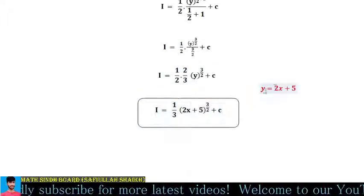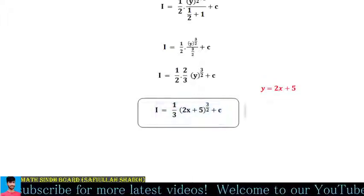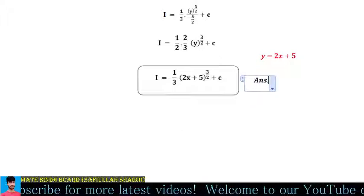Since y = 2x + 5, substitute back to get the final answer: 1/3(2x + 5)^(3/2) + c.